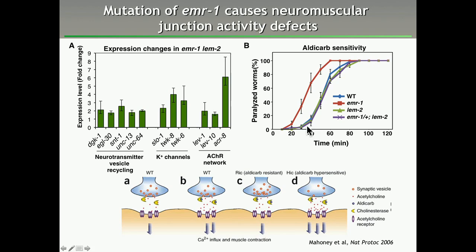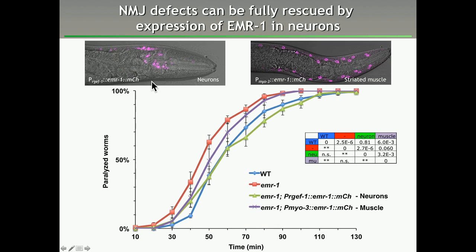This assay cannot directly discriminate whether defects are on the pre- or post-synaptic side of the synapse. So we expressed Emerin fused to mCherry specifically in neurons or specifically in muscles by MosSCI single-copy integrations. Expressing Emerin in neurons rescues the phenotype nicely down to wild-type levels, whereas expression in muscle gives only a partial rescue. So expression of Emerin specifically in the nervous system can rescue the phenotype.